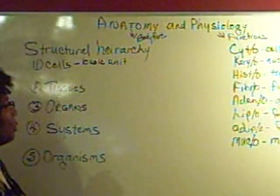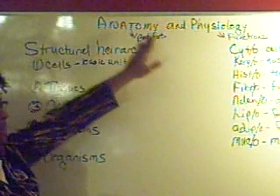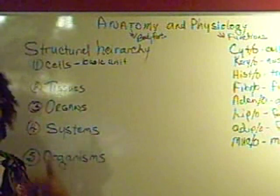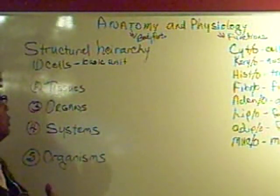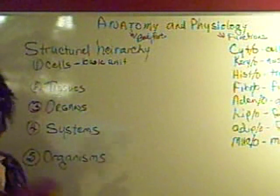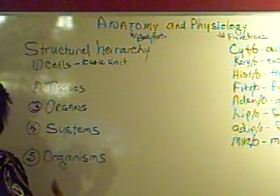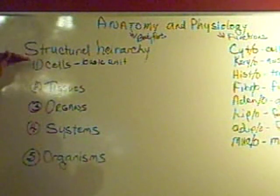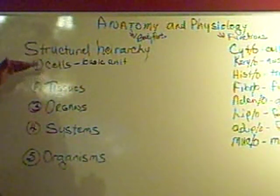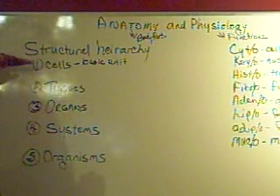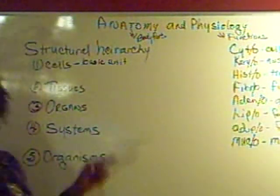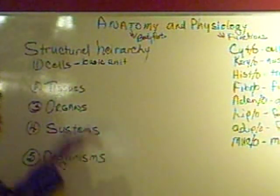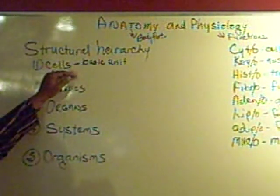Before we can really study anatomy and physiology, we have to have a basic guideline as to what the structure of the human body is, or what the structure of a living organism is. This is the way that organisms are built. The cells are the smallest basic unit, the smallest structural unit of a living being.